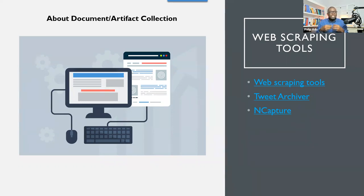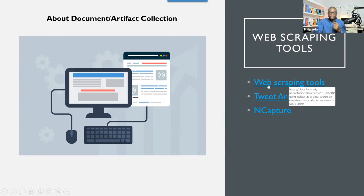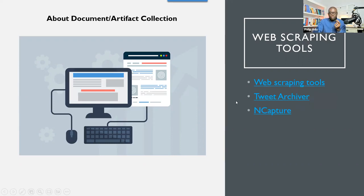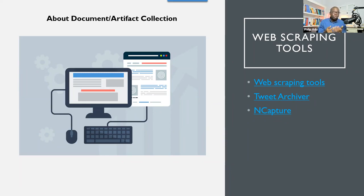Web scraping tools can help us to extract information to address our research question. When you get access to my PowerPoint slide and click on the link, you'll be able to get information about different types of tools you can use to extract data online. One of them is Archiva — this software can help you extract information from Twitter. And then the last one I will be using for this presentation is NCapture. You can extract any information from a website as a PDF, extract a video from YouTube, extract a post from Twitter, or extract information from Facebook.